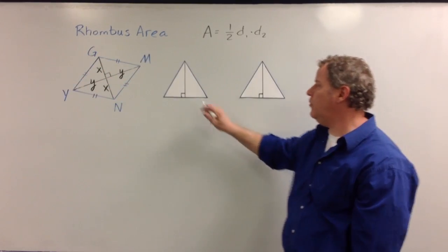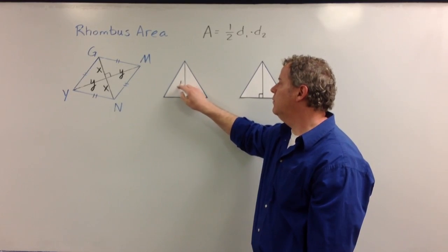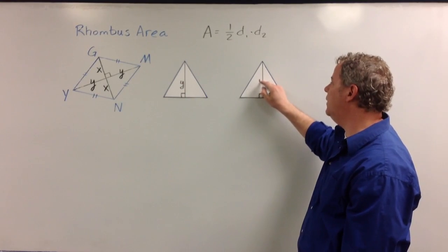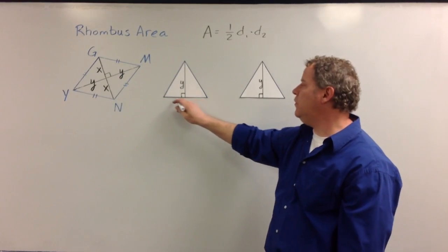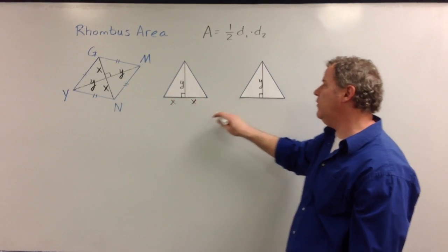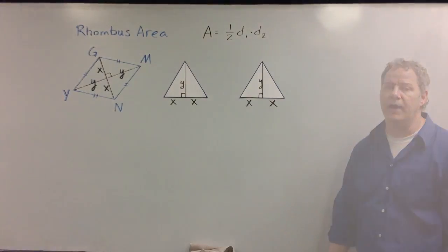We said that the height of this triangle was y, and the height of this triangle was y. That's coming from these two places here, and we know that the distance across here is an x and another x, and the distance across here is an x and another x.